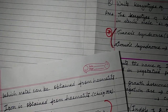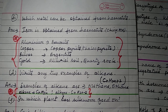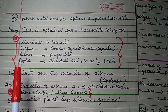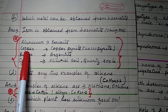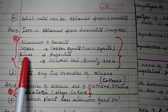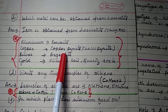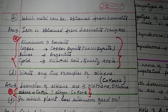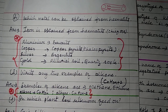Question 1H: Which metal can be obtained from hematite? Iron is obtained from hematite. Hematite is the chief ore of iron. Similar questions: aluminum is obtained from bauxite; copper is obtained from copper pyrite or chalcopyrite; silver is obtained from argentite; gold can be obtained from alluvial soil or quartz rock.